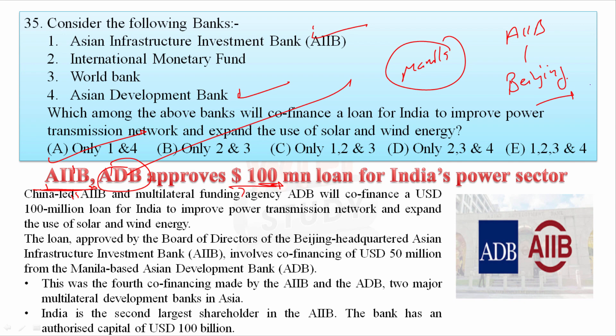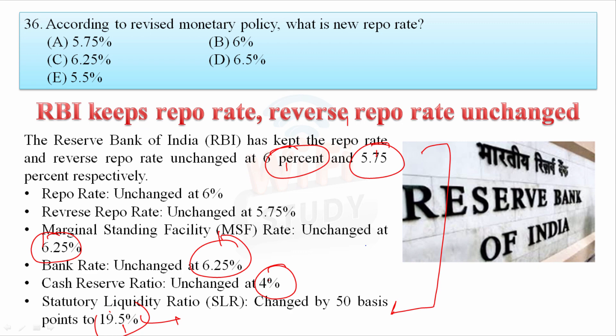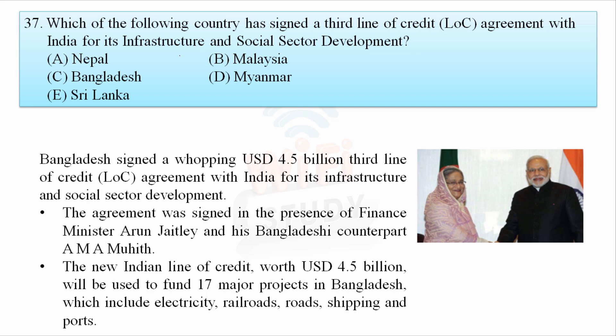According to the revised monetary policy, what is the new repo rate? The RBI kept the repo rate and reverse repo rate unchanged. The repo rate is 6%, reverse repo rate is 5.75%, MSF rate is 6.25%, bank rate is 6.25%, CRR is 4%, and SLR is 19.5%. Also, Bangladesh signed a 4.5 billion USD third line of credit agreement with India for its infrastructure and social sector development.